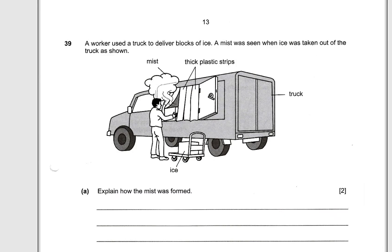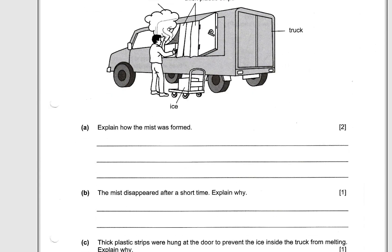Question 39. A worker used a truck to deliver blocks of ice. A mist was seen when the ice was taken out of the truck as shown below. So as he's carrying out the ice, we have this white color mist coming out. Now anytime you see the question mist or sometimes they will say like white smoke or even steam for example. So white smoke or if you have fogginess, these are all in liquid state. Now, why is that white mist coming out? Why do we see this mist when you take out a cold block of ice? So explain how the mist was formed two marks. This is just describing the process of condensation. That's it.